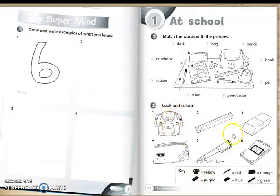Purple. For the rubber, purple. Red for this pen. Blue for this notebook. Orange for this pencil case. And green for the ruler.